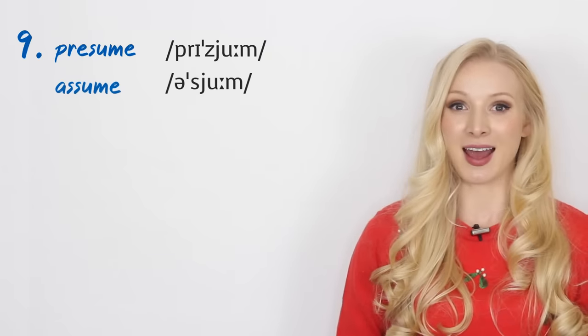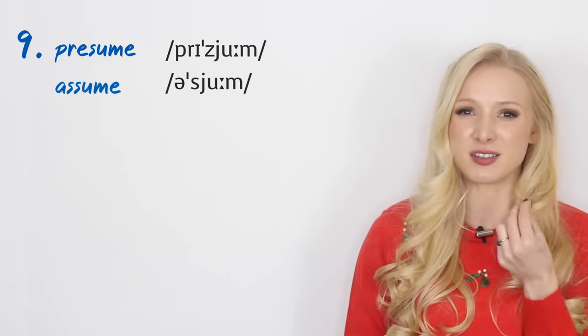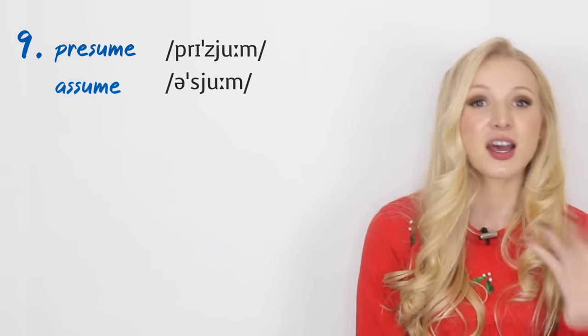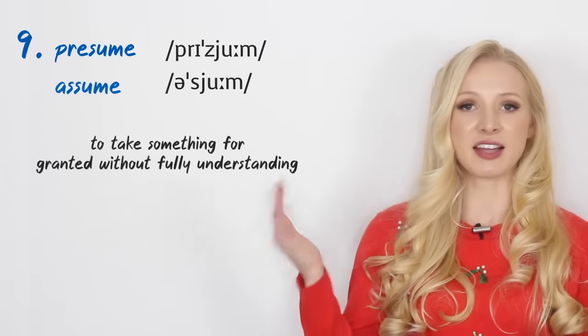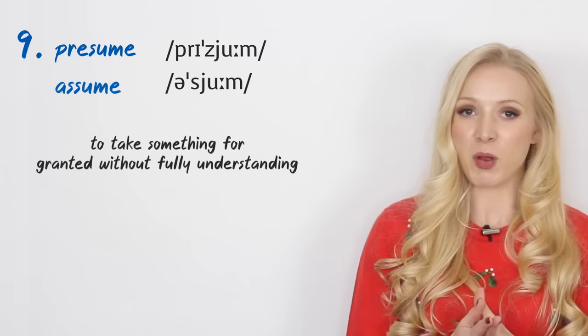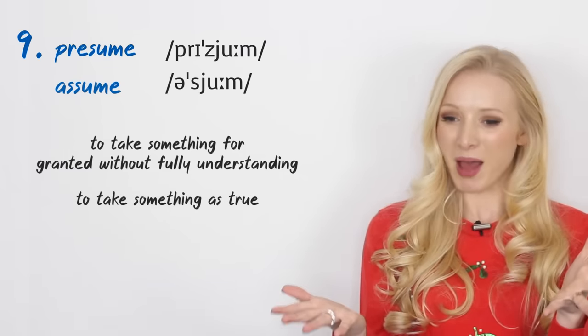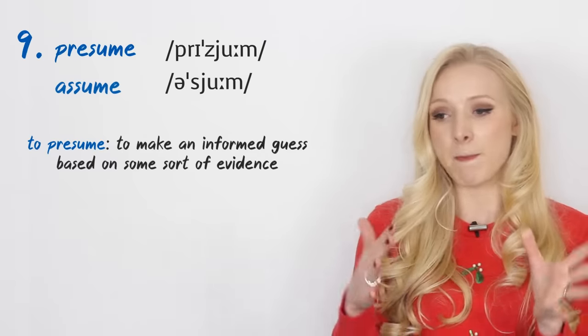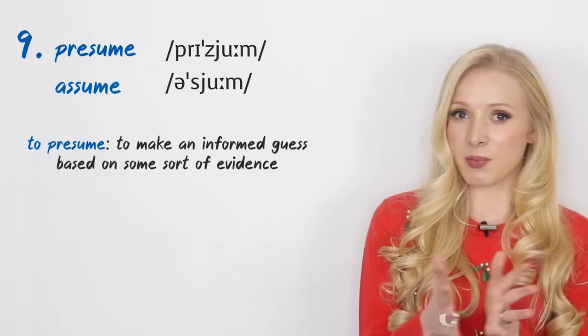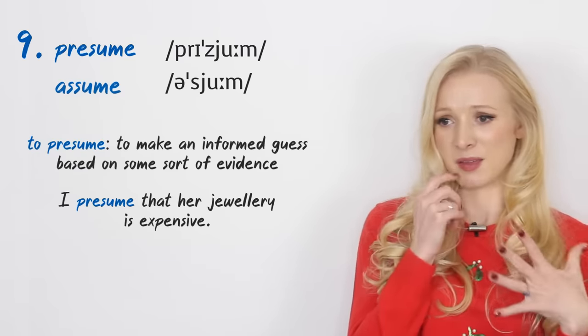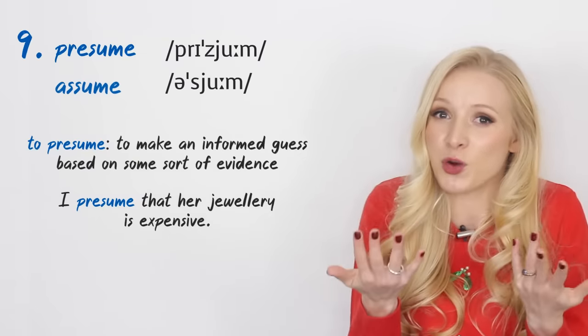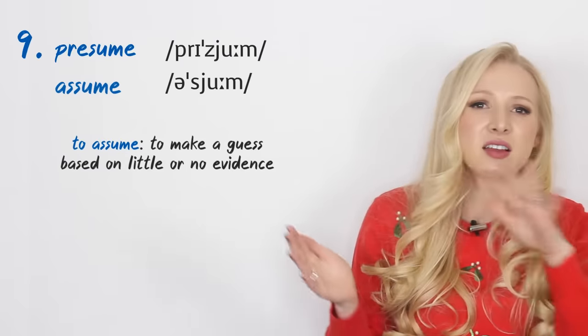Number nine, we have presume and assume. So we have presume with the Z sound and assume with the S sound. Z has voice, S has no voice. So these are synonyms. Both imply to take something for granted without fully understanding. Both mean to take something is true. But one implies more confidence. So with presume, you are making an informed guess based on some sort of evidence. An example: I presume that her jewellery is expensive. Okay, I, based on my evidence, I might have seen some before, I'm presuming it's expensive. I don't know for sure, but I have a good idea.